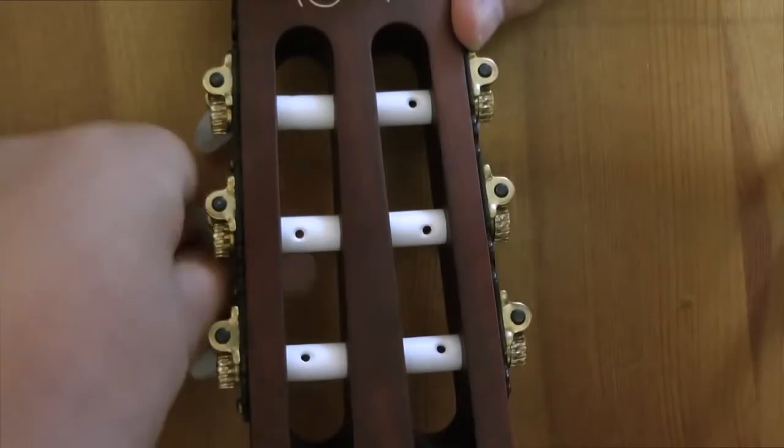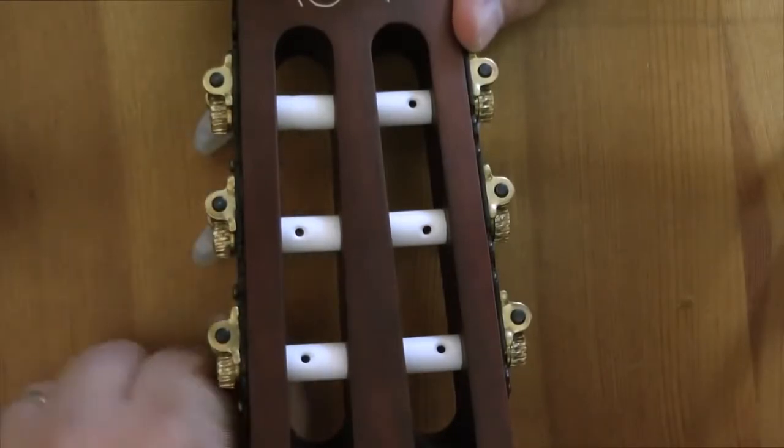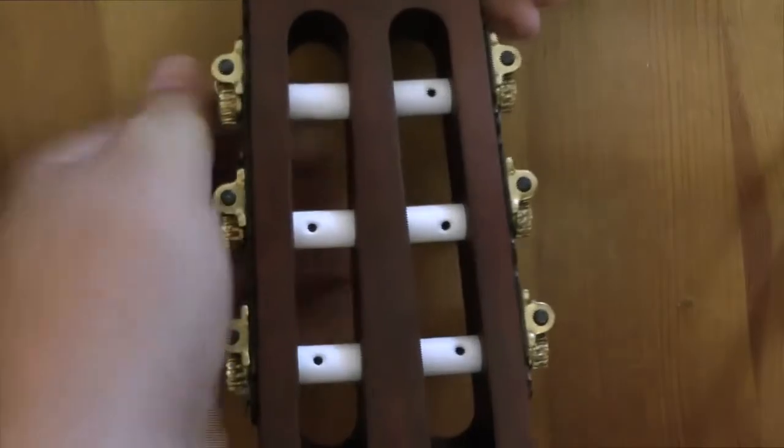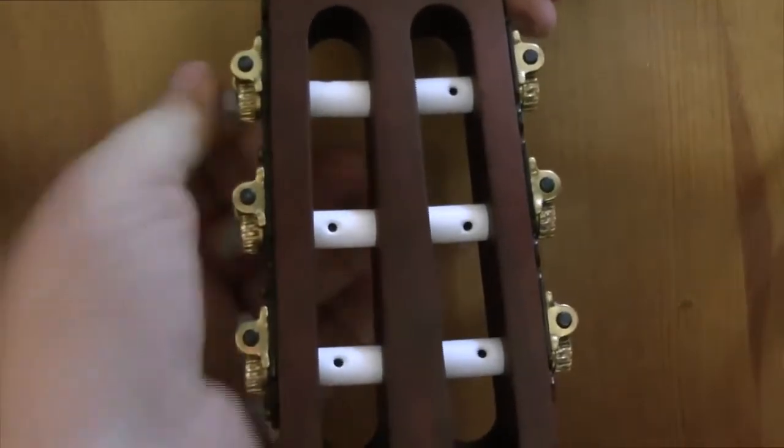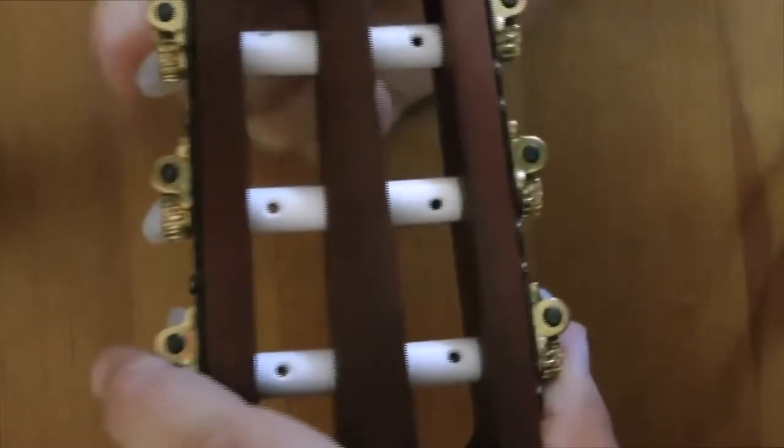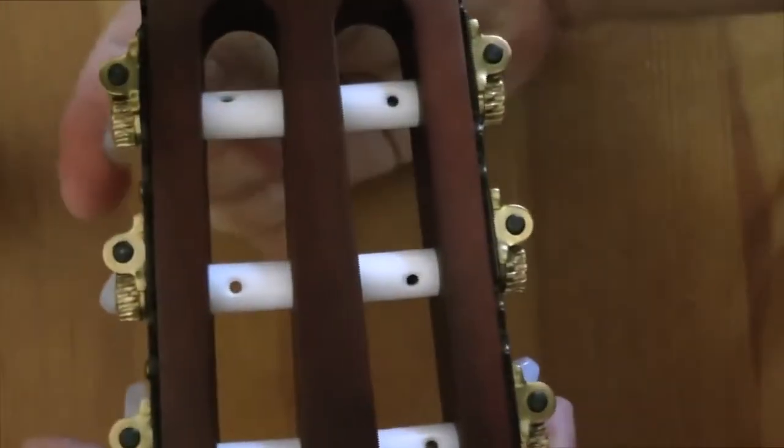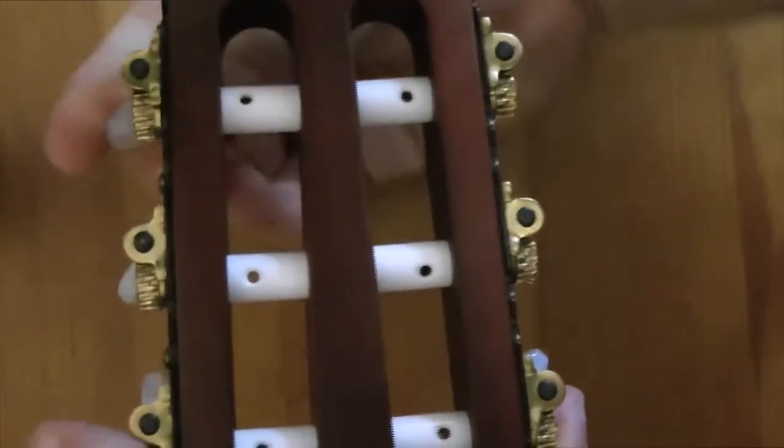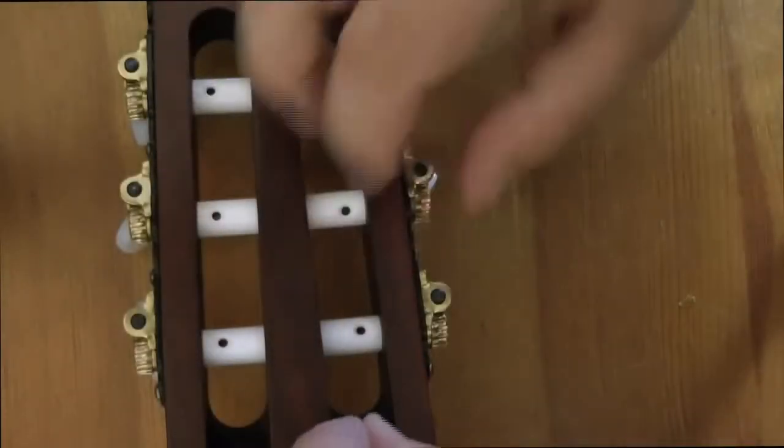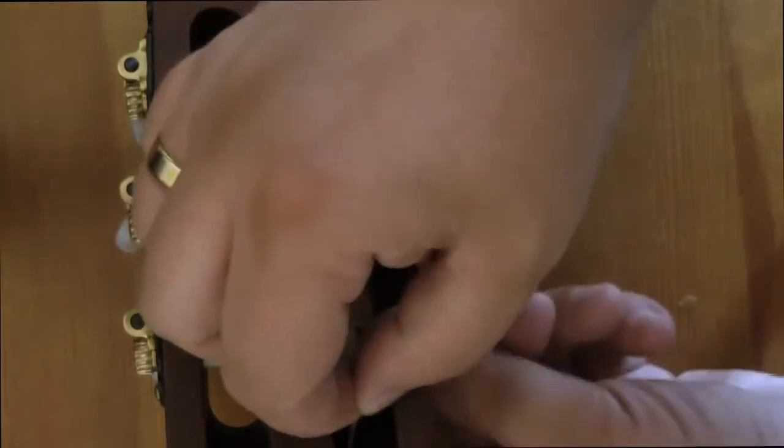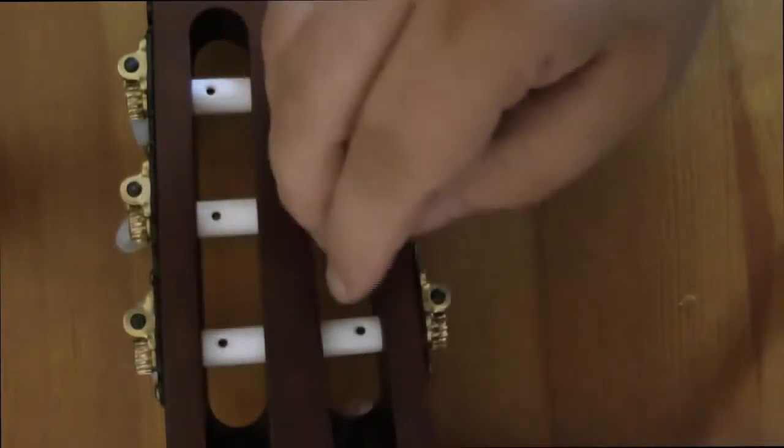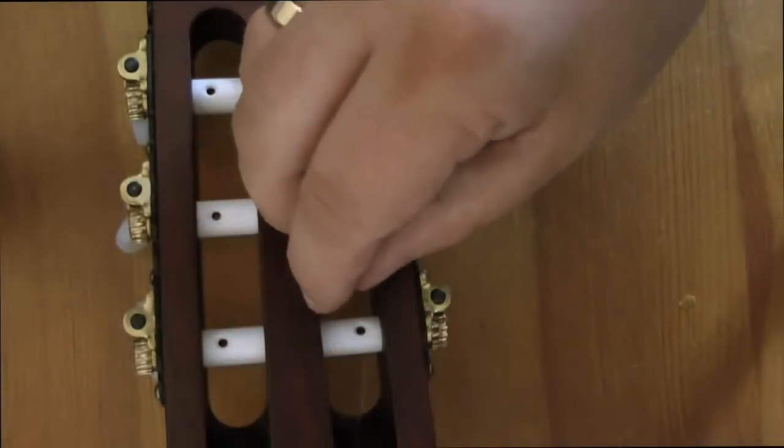Now, at the headstock, here's a tip. You need to make sure that all your eye holes on your rollers are pointing upwards, purely for easy access to get the strings in. Some of these strings can be quite difficult to manipulate. So we're going to now thread the highest E string through.